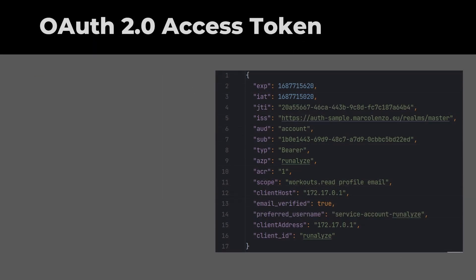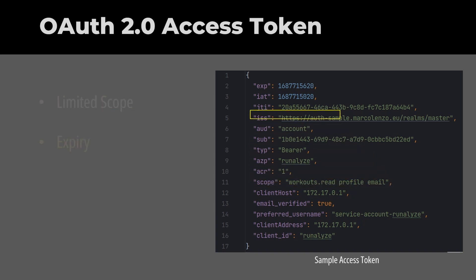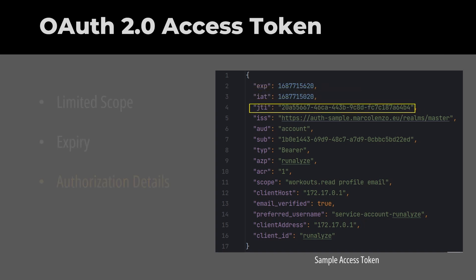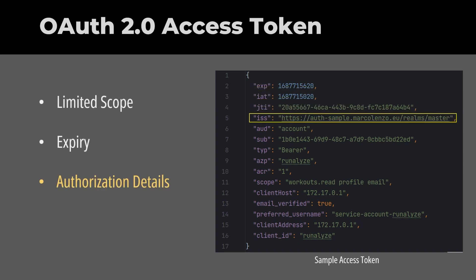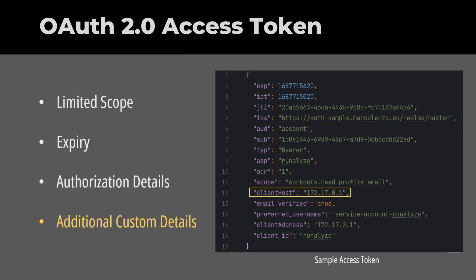The access token is a special credential with limited scope and expiry. The scope is necessary to limit what kind of operations are allowed to the client. The expiry limits the token validity from a time standpoint. This is necessary to reduce the impact of a malicious actor in case of token interception. The access token can also carry additional authorization data, like information on the issuer of the token — in other words, the authorization server URL — as well as additional customizable details.